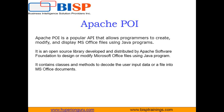Apache POI is an open source library developed and distributed by the Apache Software Foundation, which can be used to design and modify Microsoft Office files using Java programs. It also contains classes and various methods to decode user input data into MS Office documents. It is a 100% open source library, and most small and medium scale applications depend heavily on it. It supports all the basic features of Excel libraries, with rendering and text extraction being its main features.